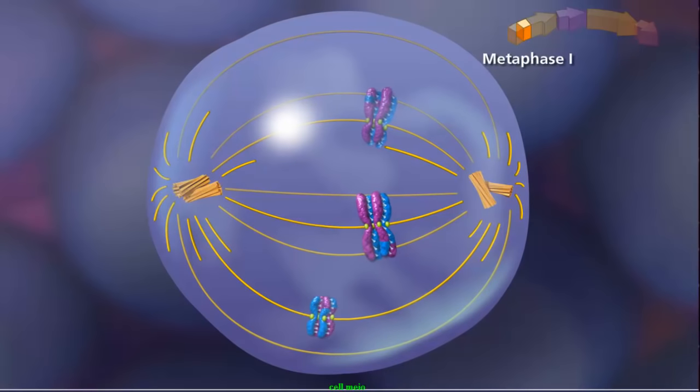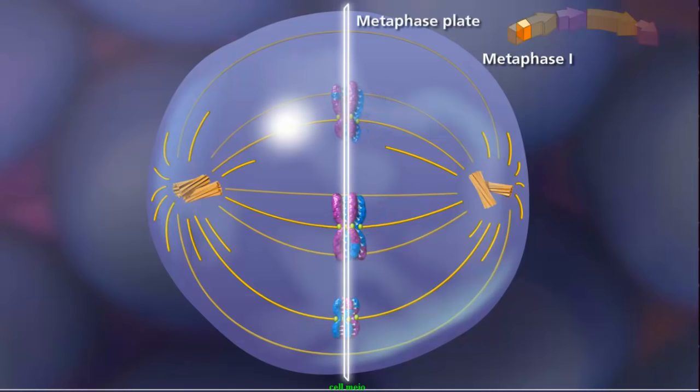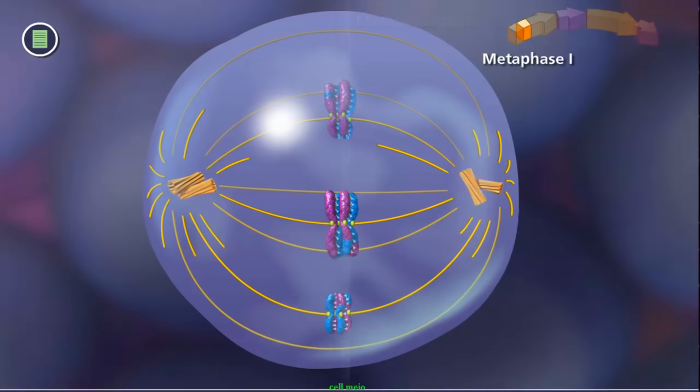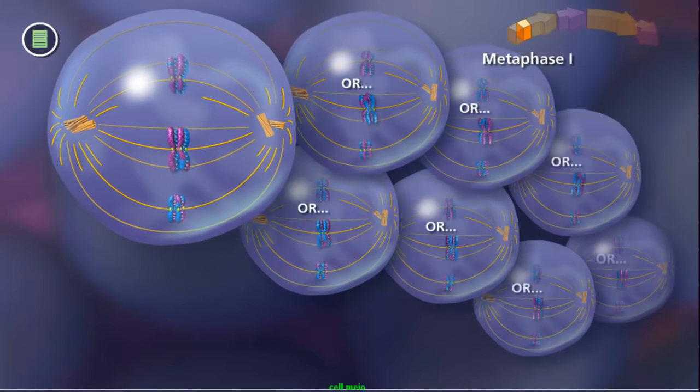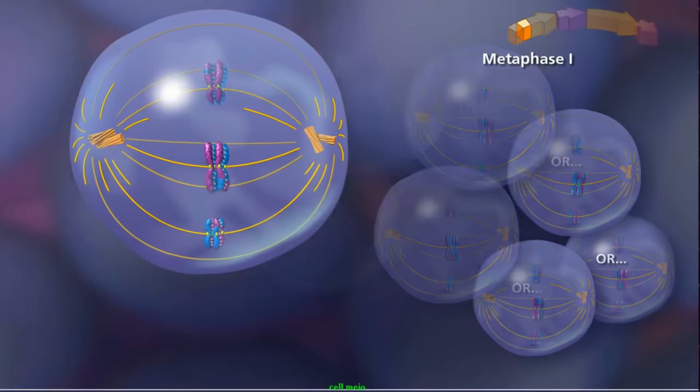During metaphase I, bivalents randomly align along the metaphase plate. Due to independent assortment, this alignment is random and adds to genetic diversity.